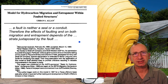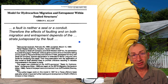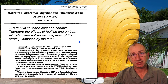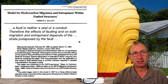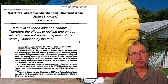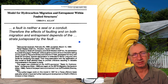If we look at the history of fault seal analysis and what Shell have done, the single most important paper in this canon is Urban Allen's work. What he says is a fault is neither a seal nor a conduit. Faulting affects migration and entrapment depending on the stratal juxtaposition of reservoirs and seals — that's the key bit to it.